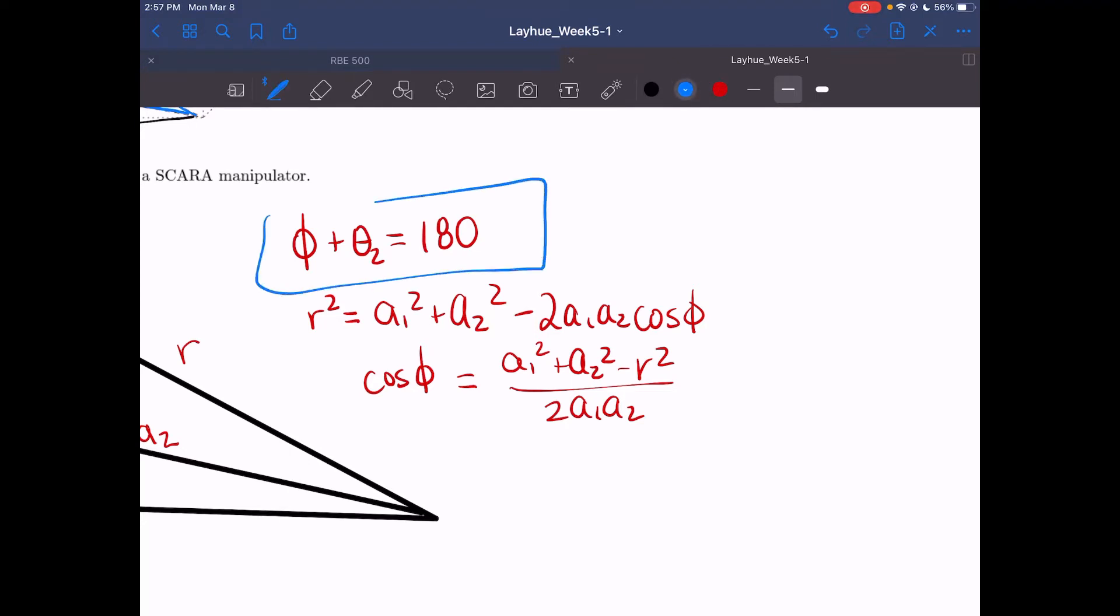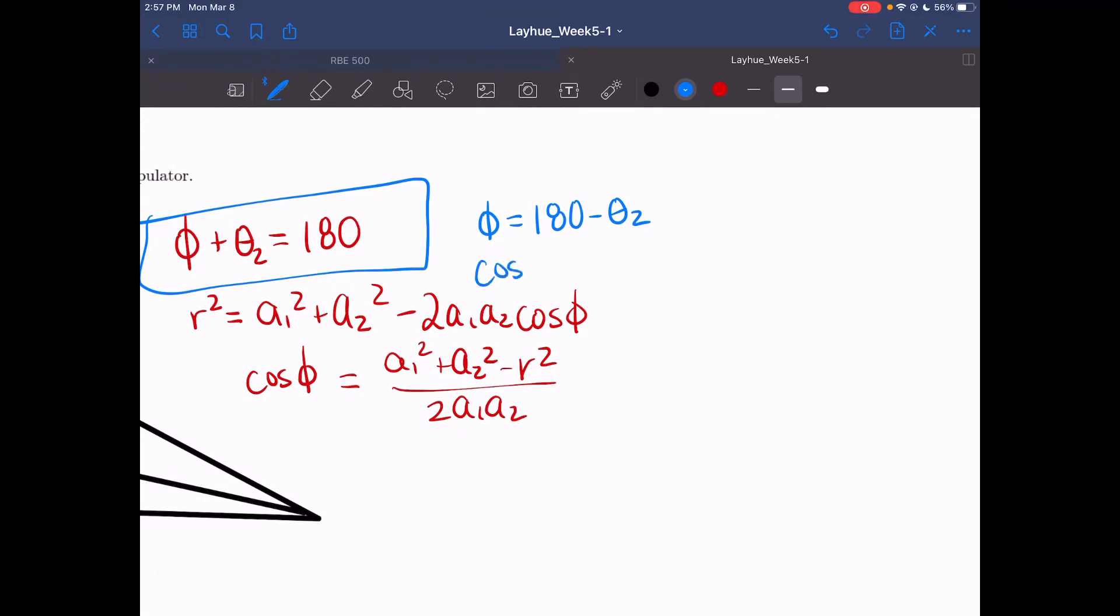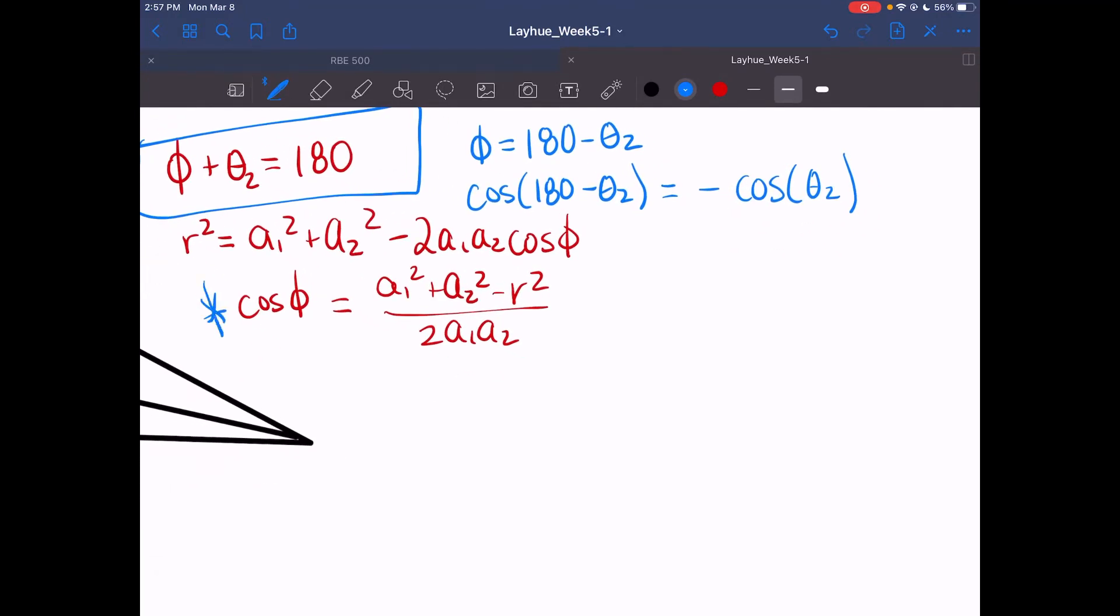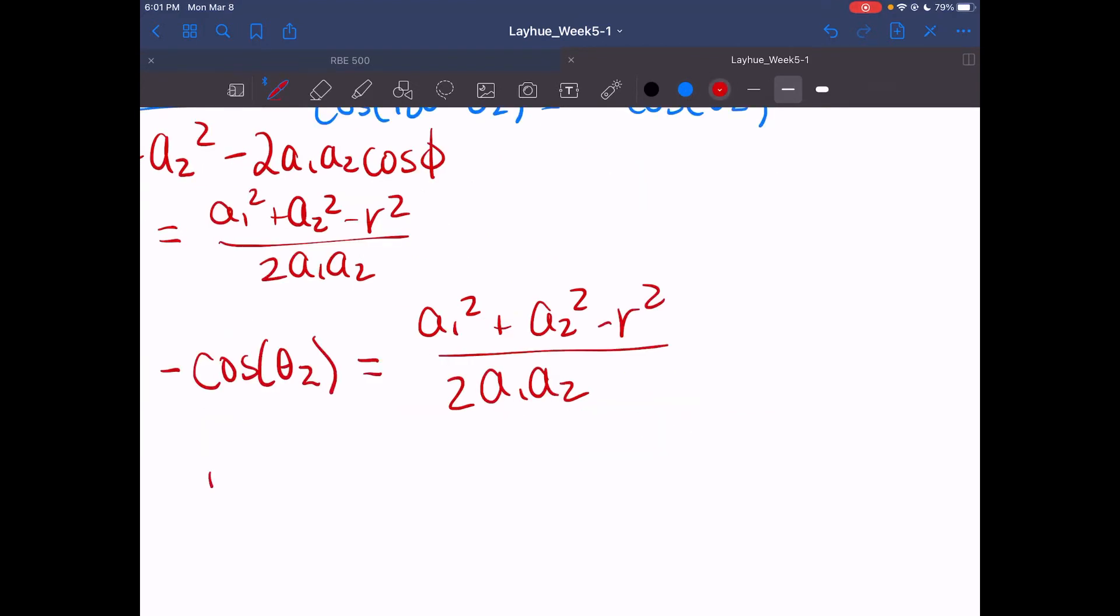And here we have cosines of phi explicitly, but we don't want cosines of phi—we want cosines of theta2. If we look at this relationship we had earlier, we can see that this can be solved such that phi equals 180 minus theta2. Now there is an identity such that cosines of an angle, in this case theta2, is equal to negative cosines of that same angle. So we plug that back into our formula here. We can rewrite this so that it is negative cosines of theta2 equals our product here.